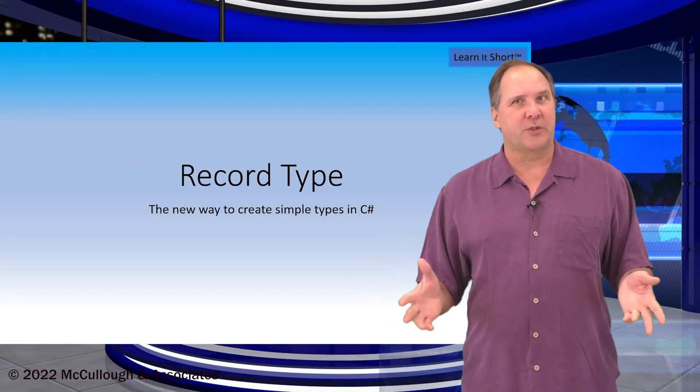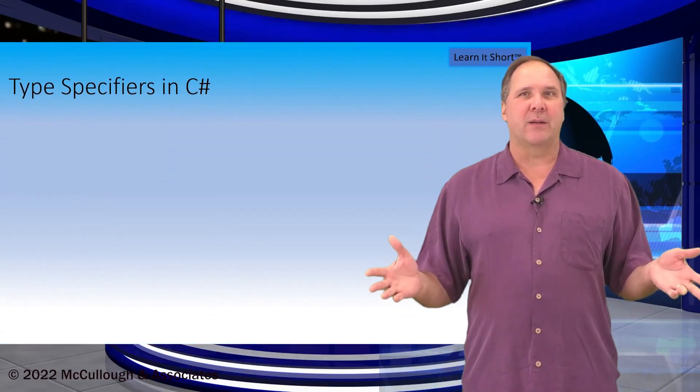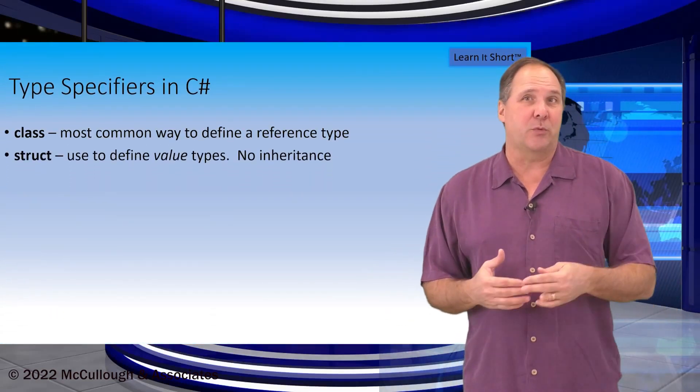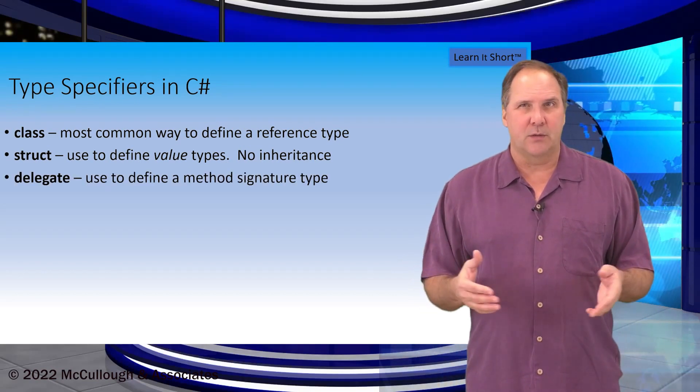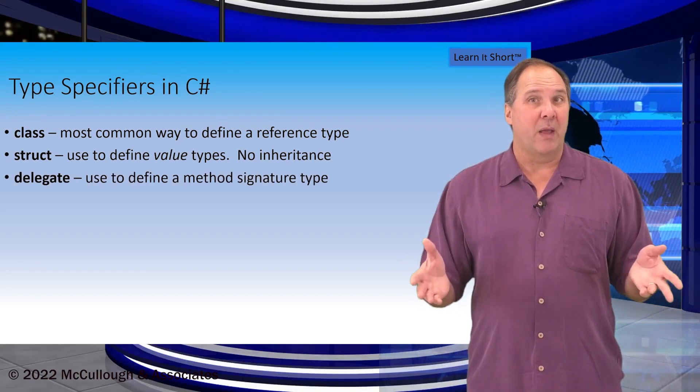Now C-sharp has several type specifiers. Of course we all know about class and then struct which we use to create value types. Another type specifier is delegate which is used to define a method signature.